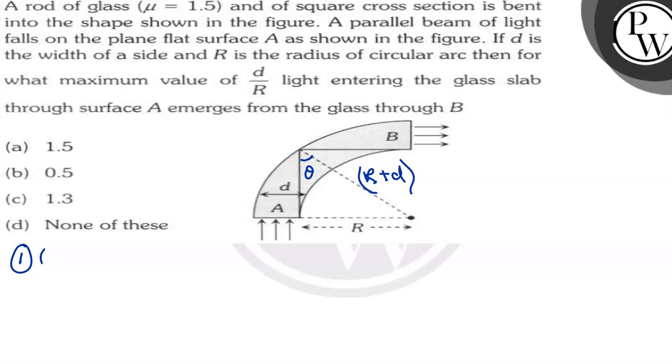And so, this incident angle to theta is the same. Then we need to increase the critical angle. Critical angle is sin IC is equal to 1 upon mu.